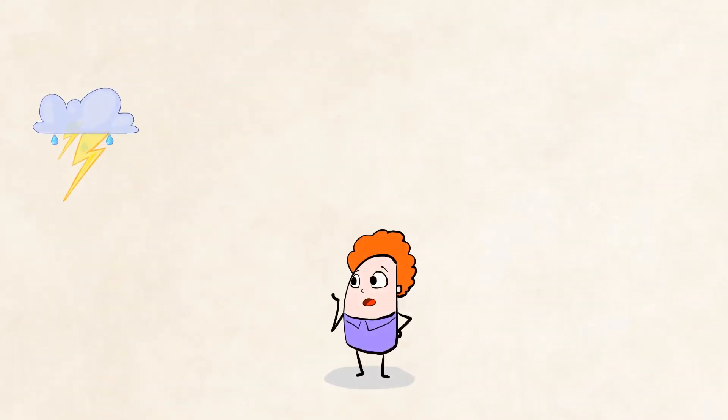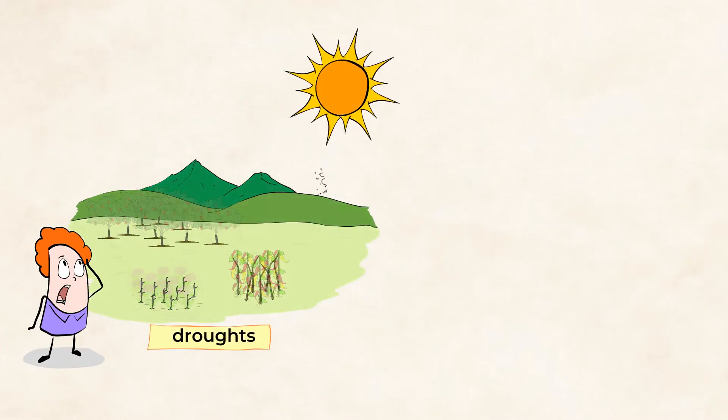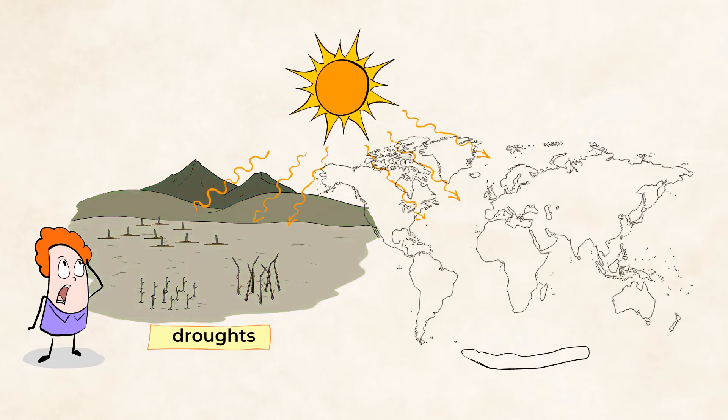Warmer weather also causes hurricanes and other extreme weather conditions, such as droughts, and heat waves in uncommon locations like Norway and Russia, even in Antarctica.